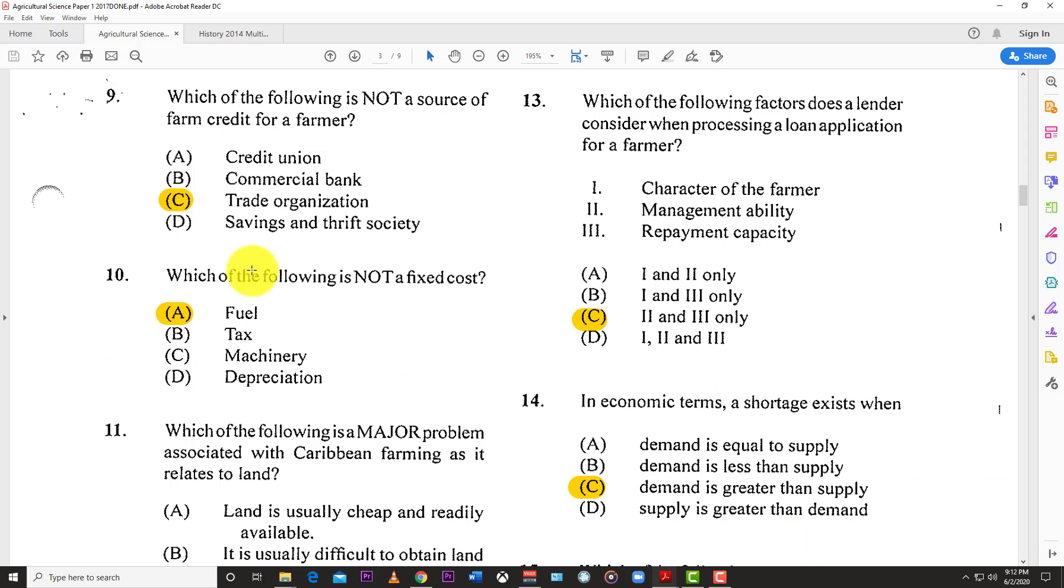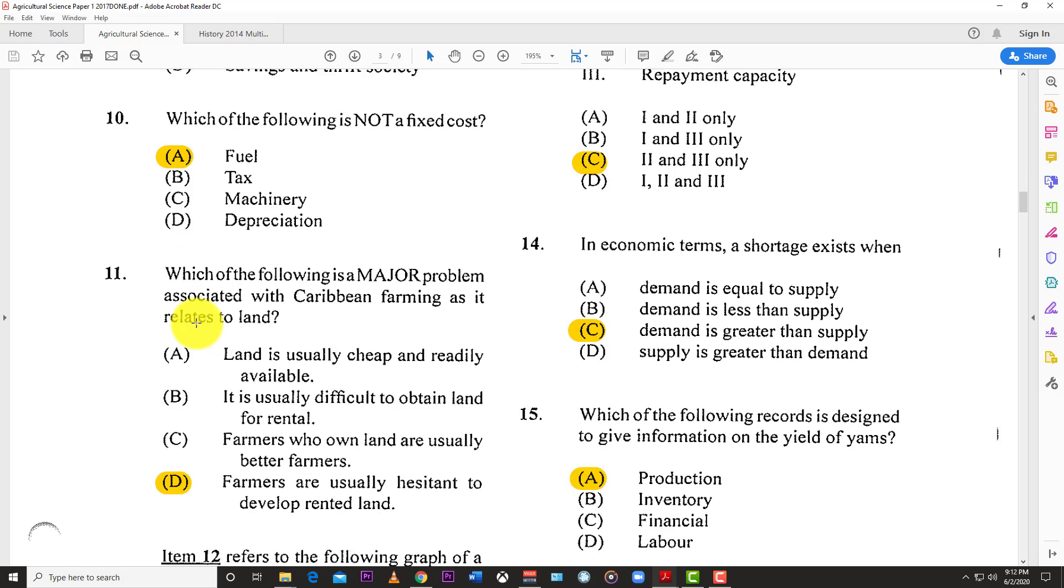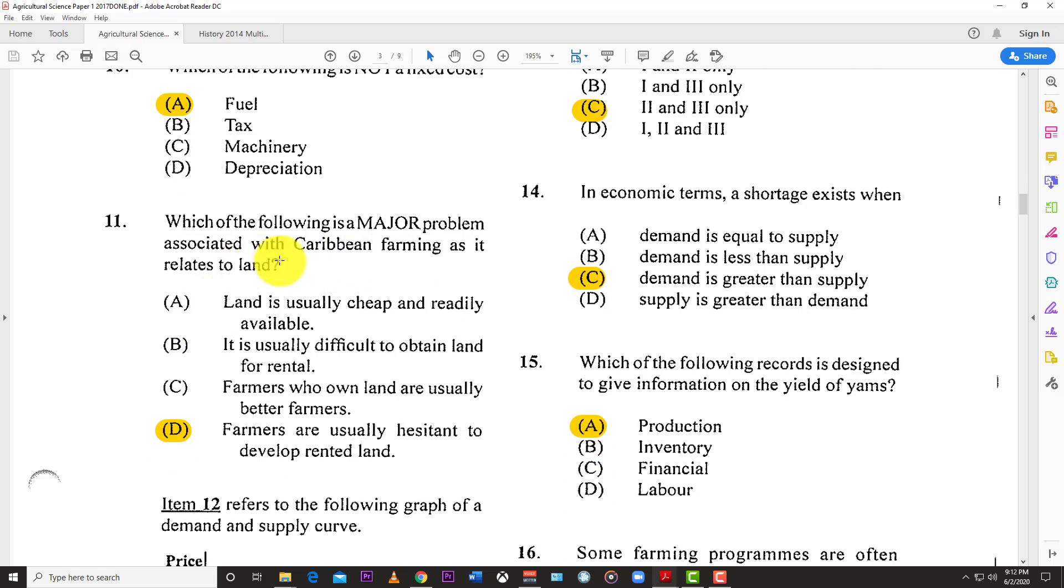Number ten: Which of the following is not a fixed cost? The answer is D, fuel. All these other costs remain the same whether you produce or not, but fuel costs can be variable and change based on your production output.